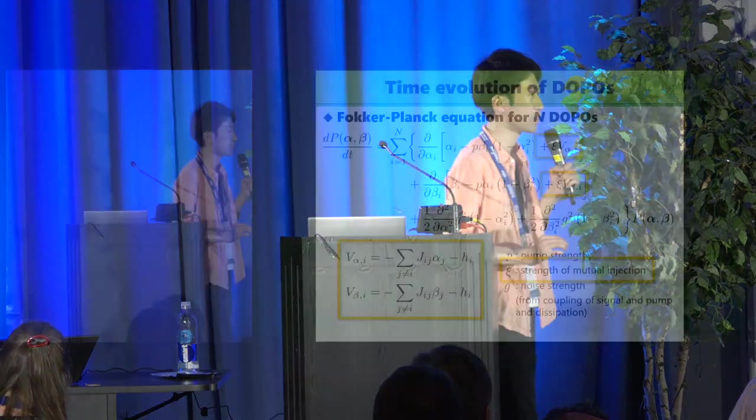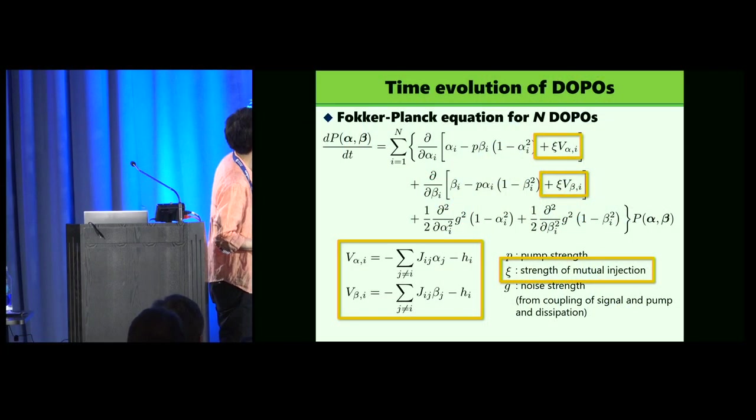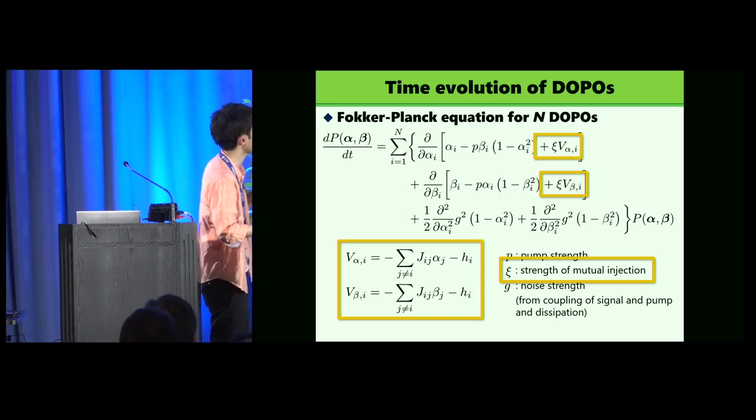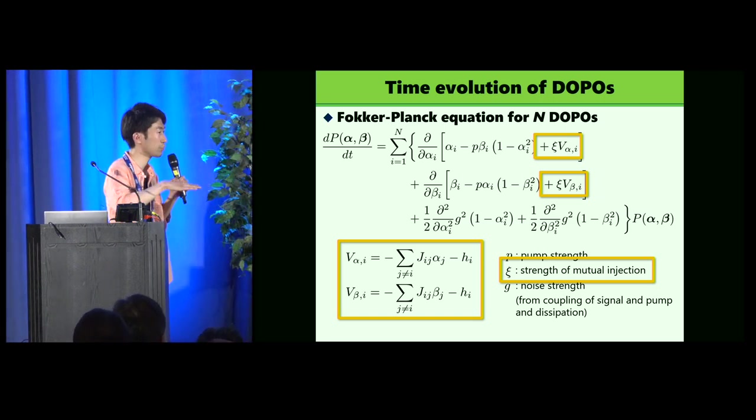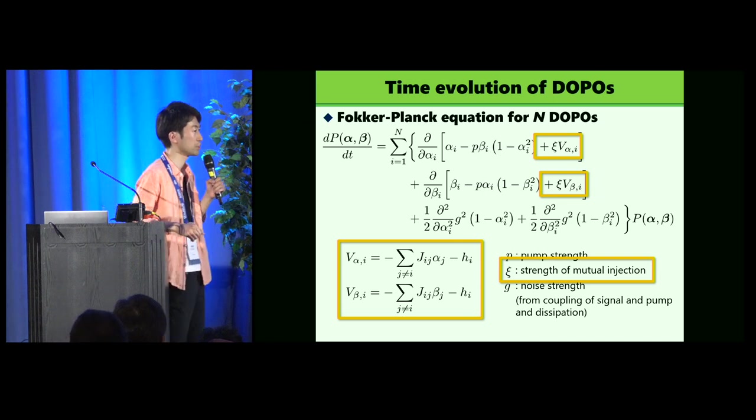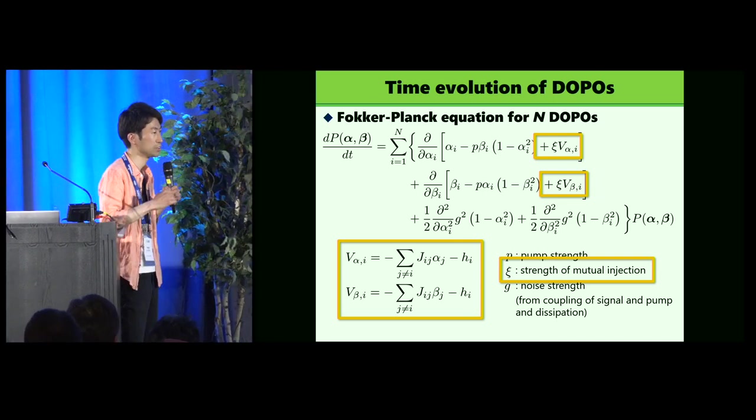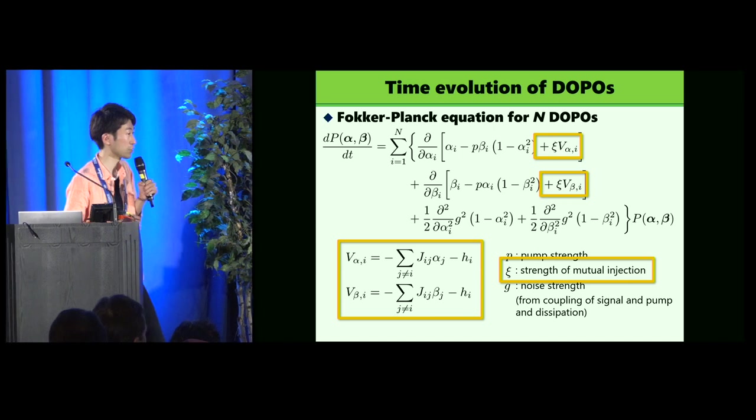In the dynamics, parameter G plays a role of temperature in this dynamics. G is a, G stems from coupling of strength, a signal in the pump in the crystal, and the dissipation to the outside. So G plays a role of temperature in this dynamics. Is that okay?